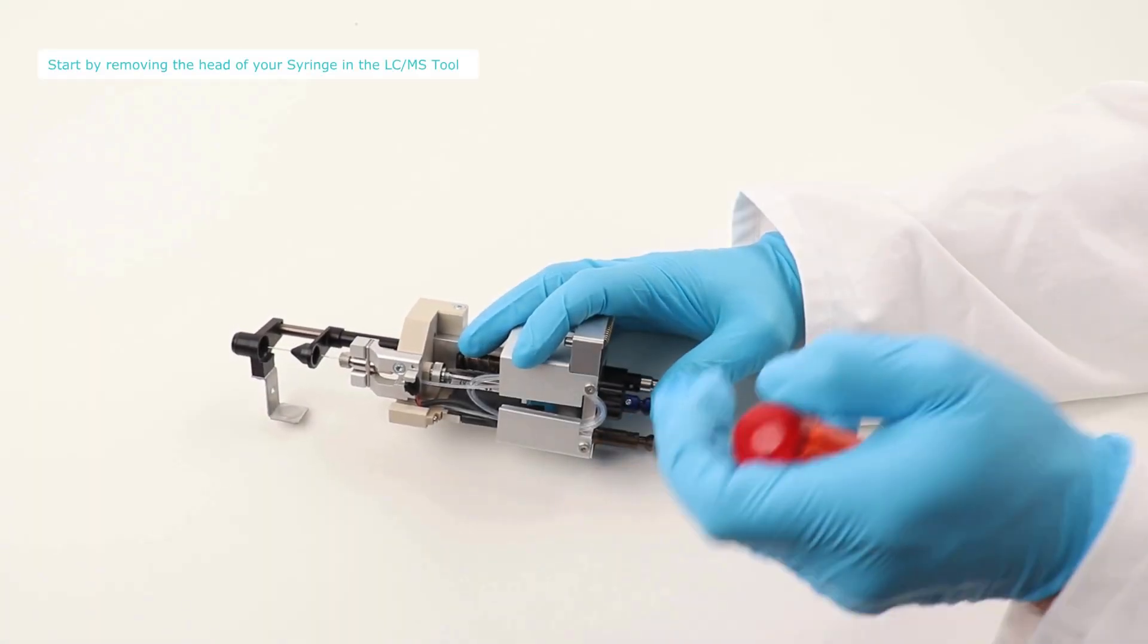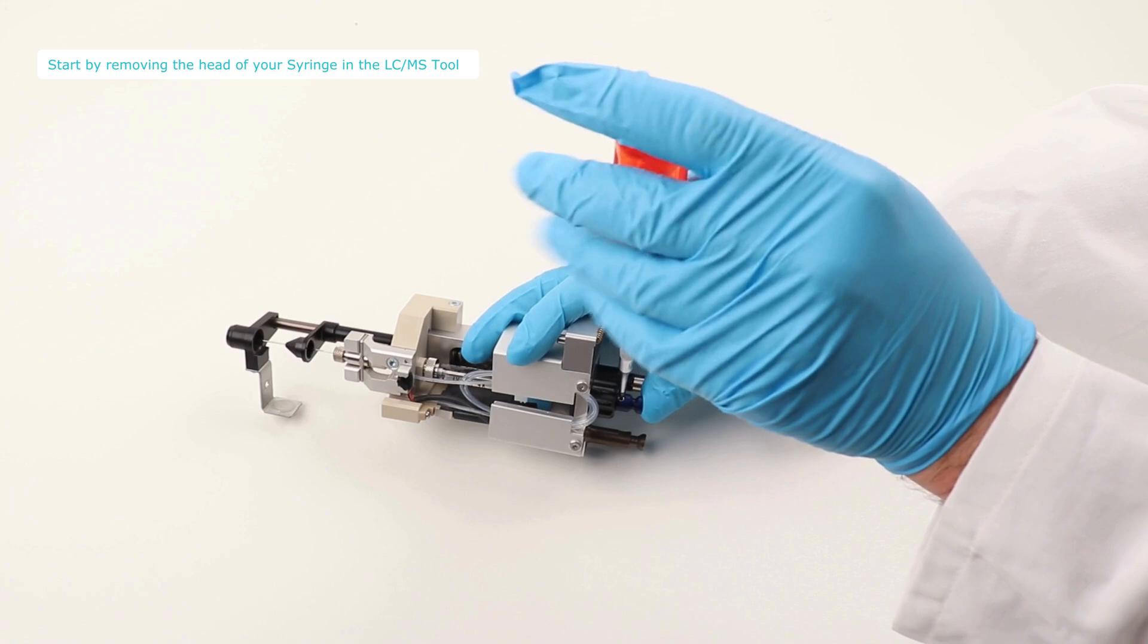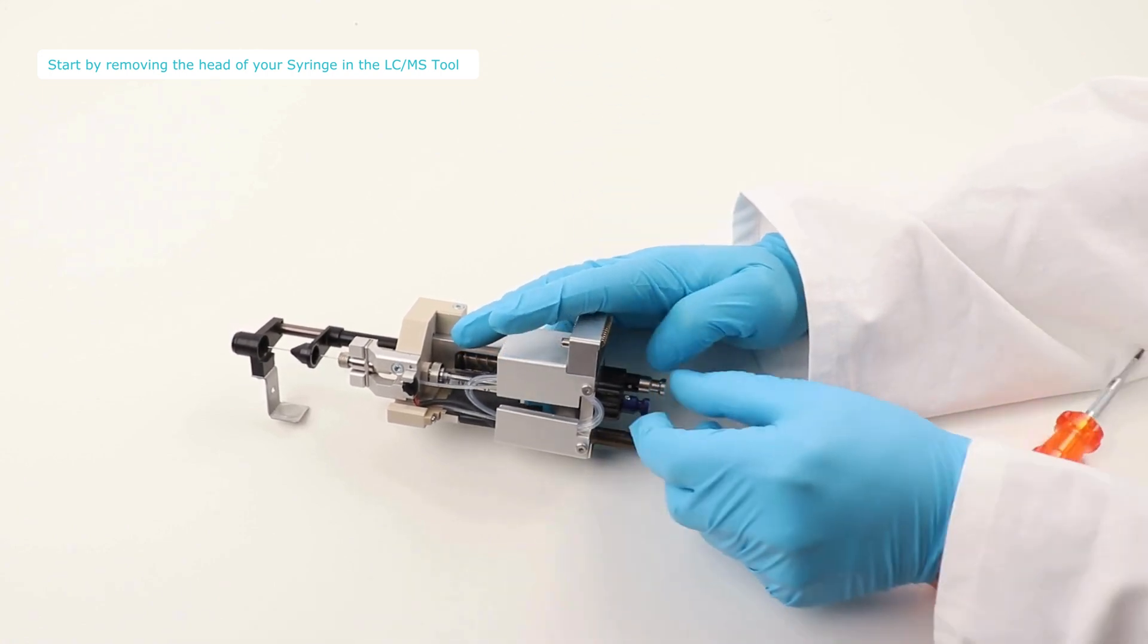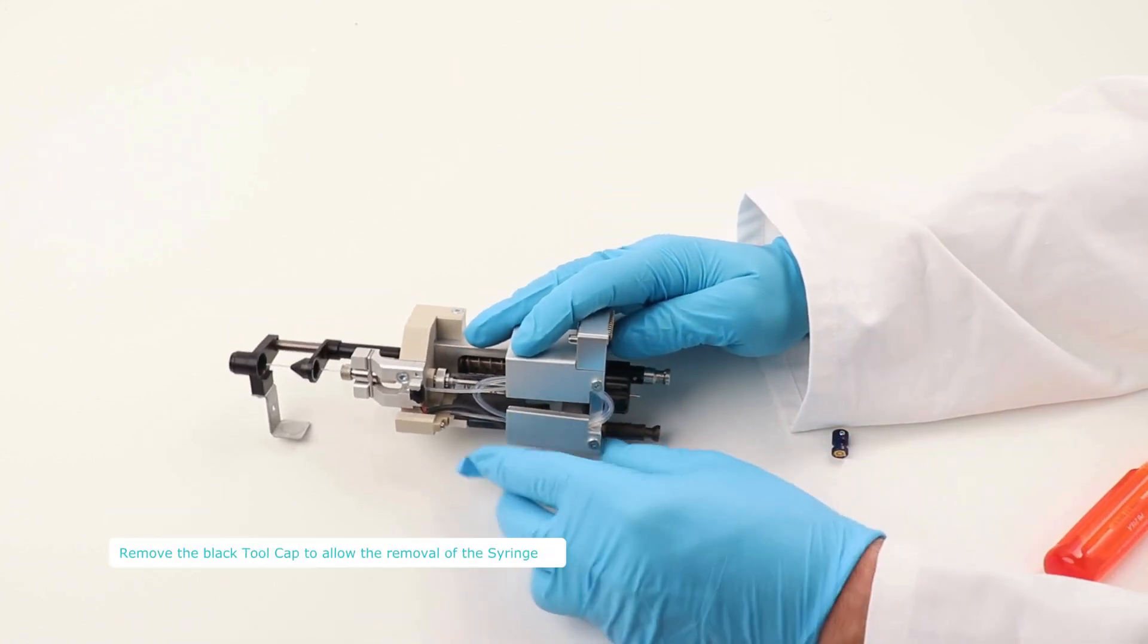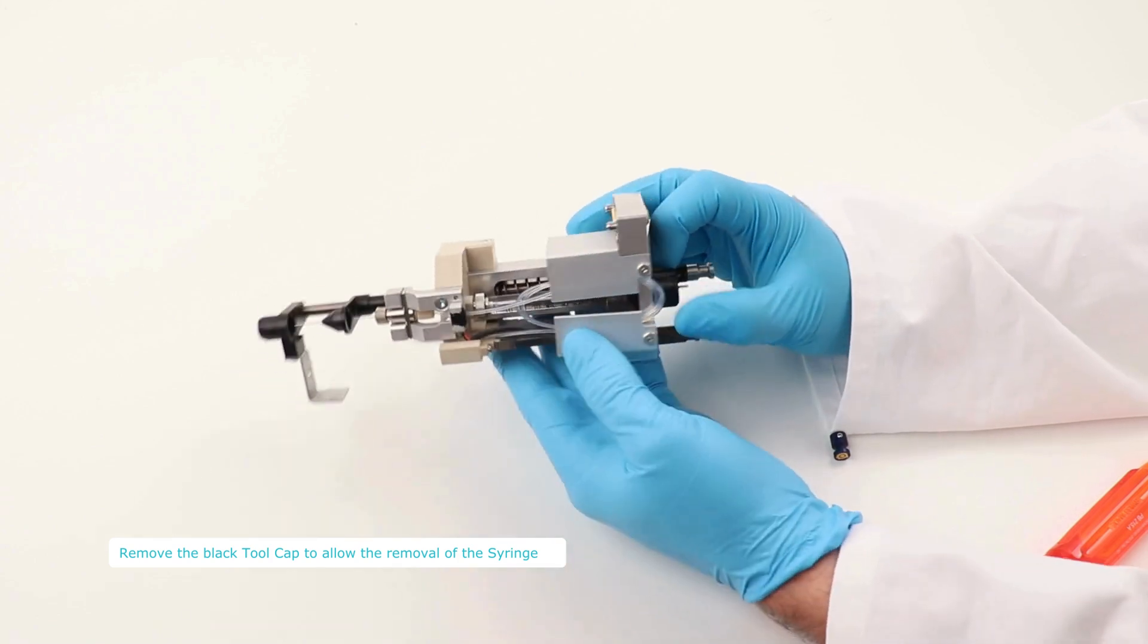Carefully detach the LC-MS tool from the PAL system. Next, identify the syringe head screw and unscrew it to remove the head, revealing the plunger.